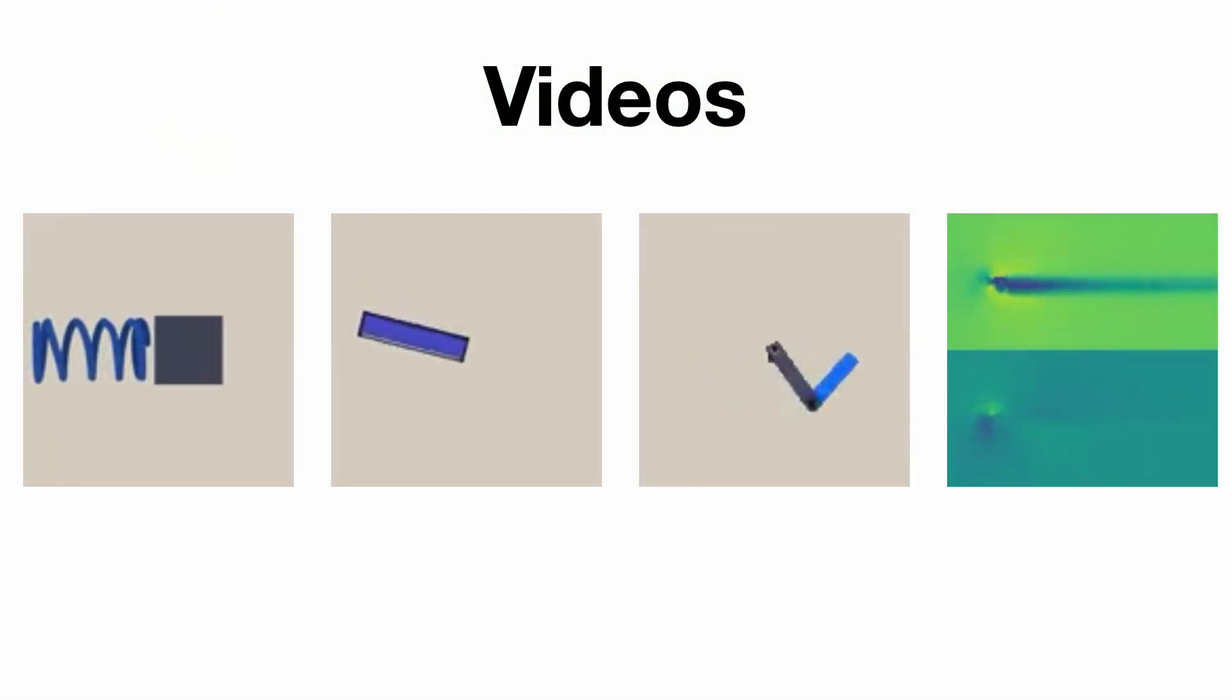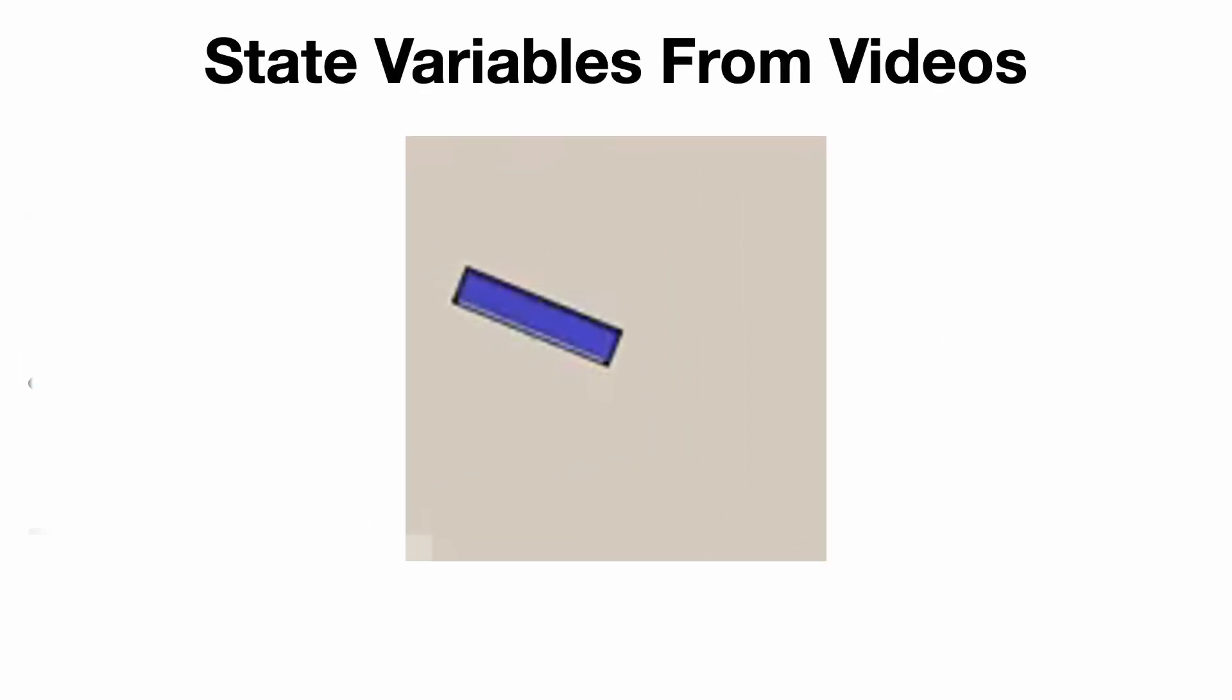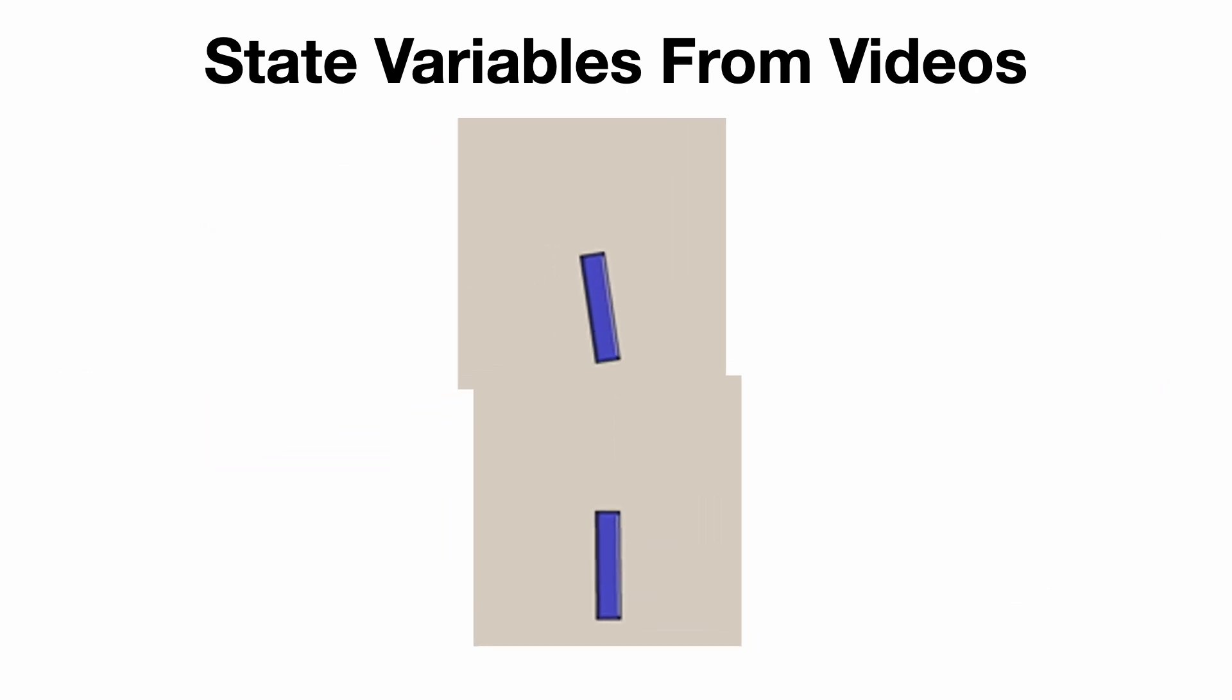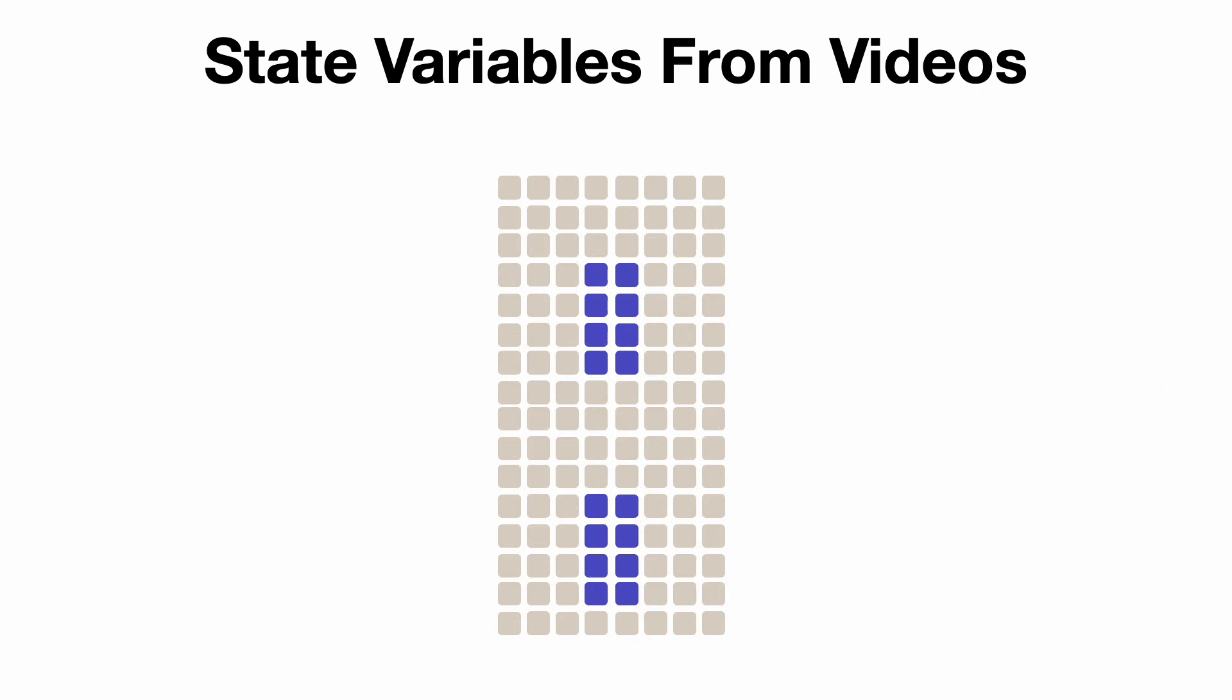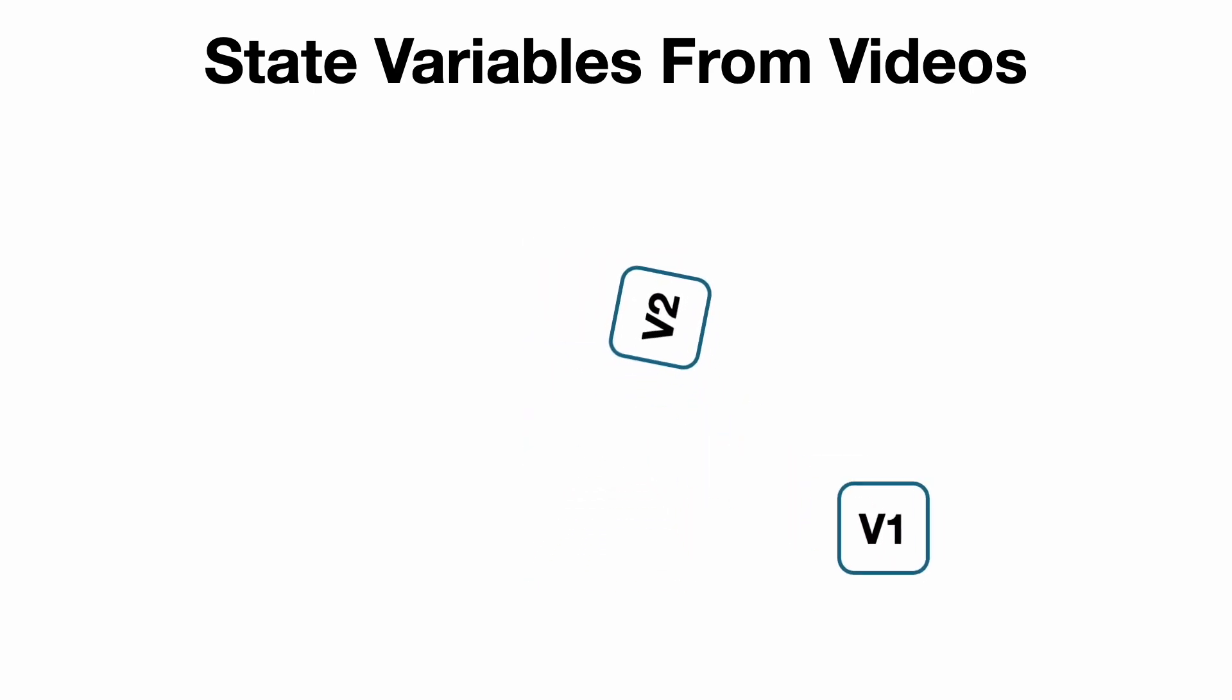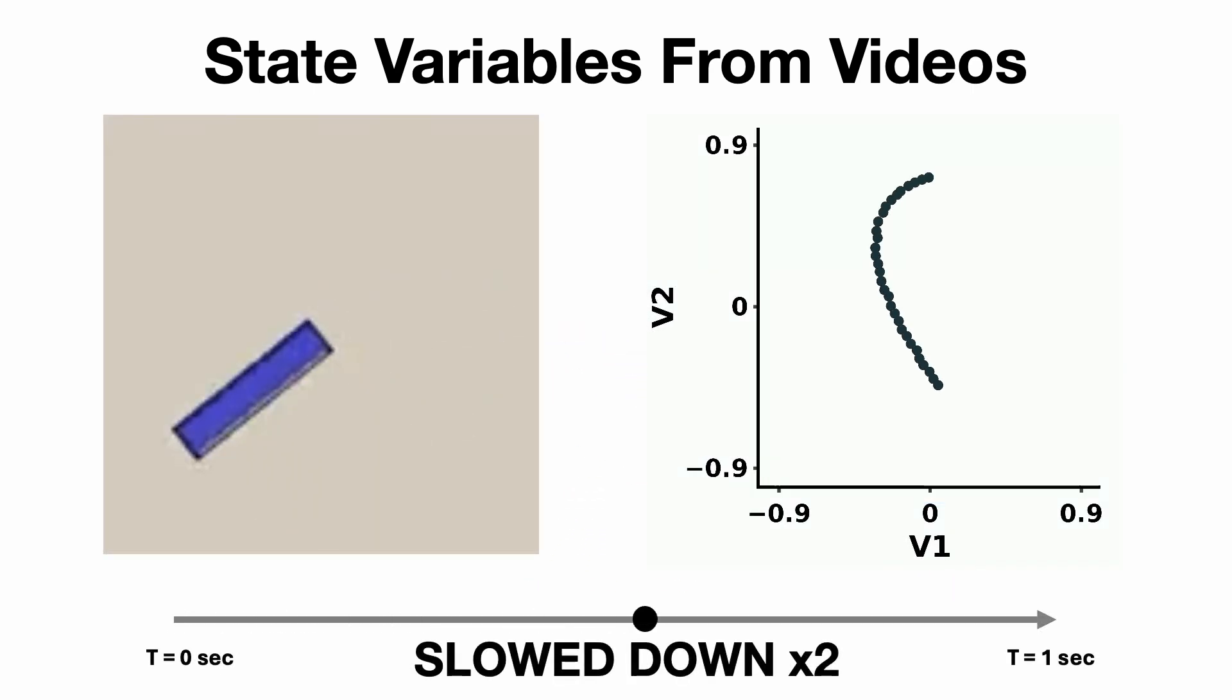Now let us describe our method to extract hidden variables from raw video recordings. Videos consist of sequences of images, each containing thousands of pixels. Our goal is to reduce these high-dimensional representations into variables of intrinsic dimension while capturing the system's dynamics with smooth trajectories.